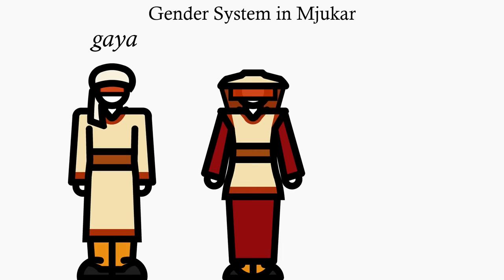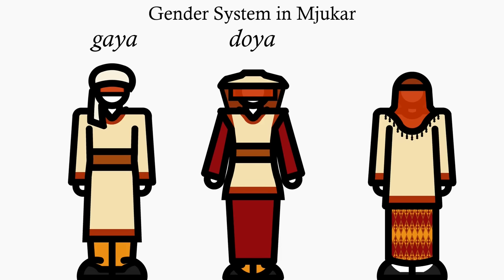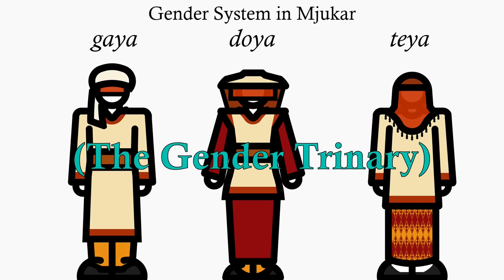The gender system in the Renral Desert has men, gaia, women, doia, and a third gender, which historically grew out of a priest class, teia. For the philosophical fun of it, I decided to go for a confining and highly discriminatory gender trinary instead of binary.